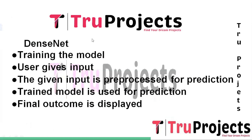The seventh model is DenseNet — a densely connected deep learning architecture that introduces skip connections between layers. In DenseNet, each layer receives feature maps from all previous layers, facilitating information flow and feature reuse. In this project, DenseNet will be employed to extract essential features from food images and estimate calorie content. The dense connections improve gradient flow and encourage feature reuse, leading to efficient training and improved performance.